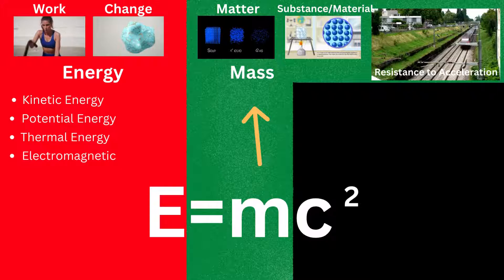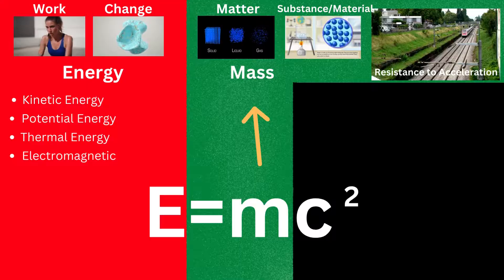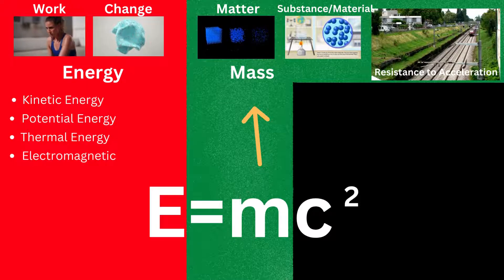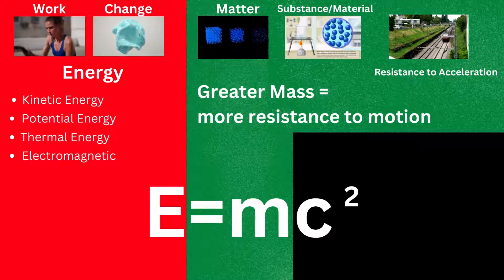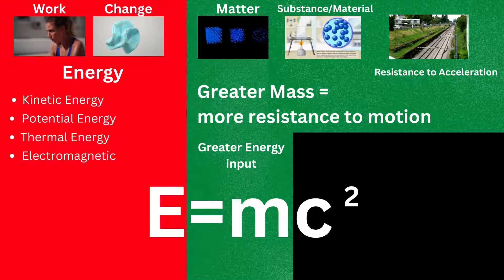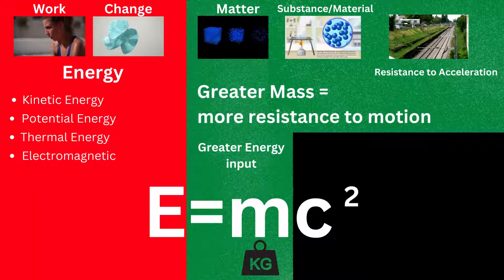The mass of an object is also a gauge of its resistance to acceleration after a force has been applied to it, the force of motion for example. Explained simply, the more mass an object has, the more it will resist the force of motion, and so it will require a greater force of motion energy to move it. In physics, mass is commonly expressed in kilograms.